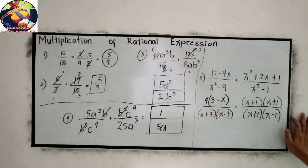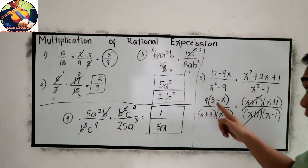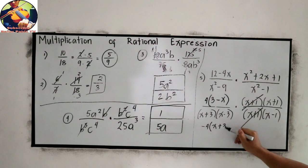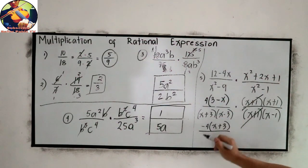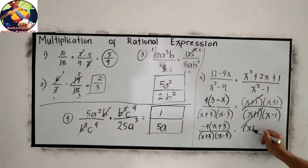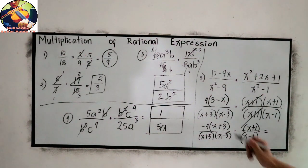Now let us cancel similar terms. X + 1 and X + 1. We have -4(3 - X) over (X + 3)(X - 3) times (X + 1)(X - 1). Cancel similar terms, X + 3 and X + 3. And for our final answer, -4(X + 1) over (X - 3)(X - 1).